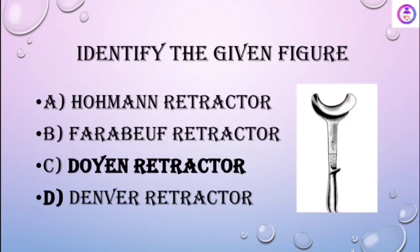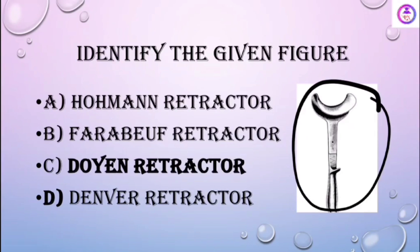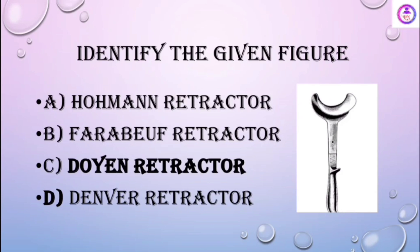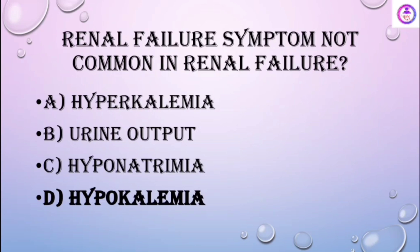Identify the given figure. This is the Doyen's pelvic retractor, which is used to retract the bladder during a caesarean section for easy visibility of the uterus before taking the incision on the uterus.